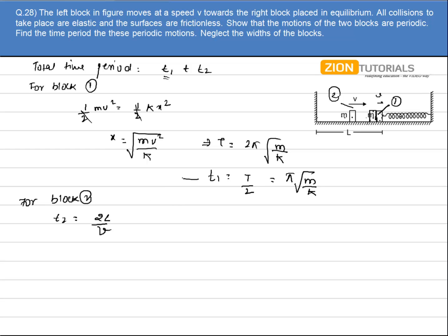So now I have a value of t1 and t2. So the total time period of the complete motion will be equal to t1 plus t2, and that is equal to pi under root of m by k plus 2L by v. That is the answer.